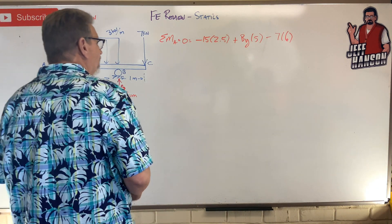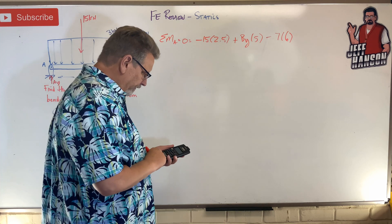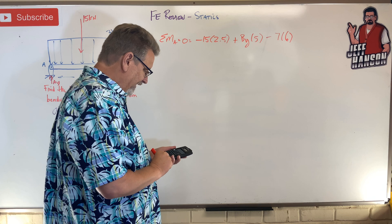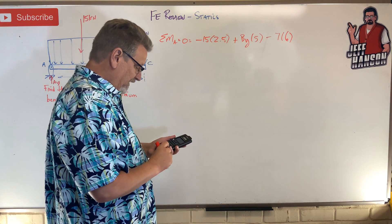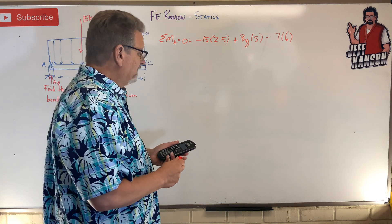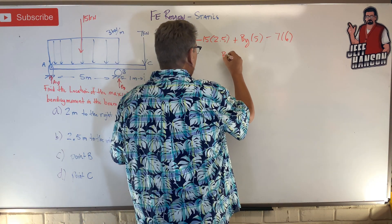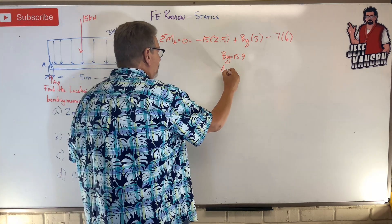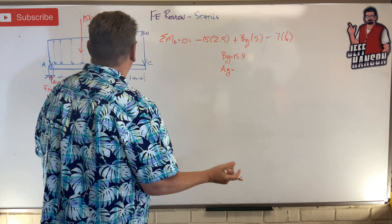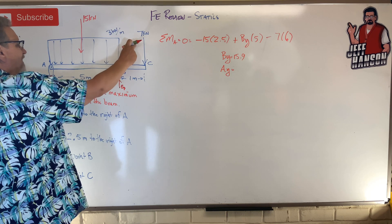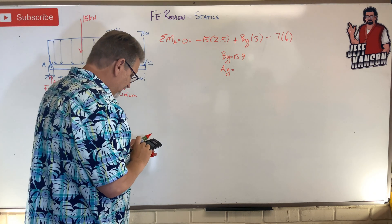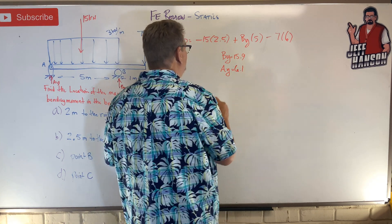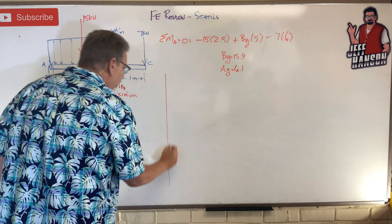Where's my calculator? 42 plus 15 times 2.5 equals 79.5 divided by 5 equals 15.9. So By equals 15.9. What's Ay equal to? Remember, up stuff equals the down stuff, so going down I got 22, so 22 minus 15.9 equals 6.1 for Ay. And then we ought to just plot this.